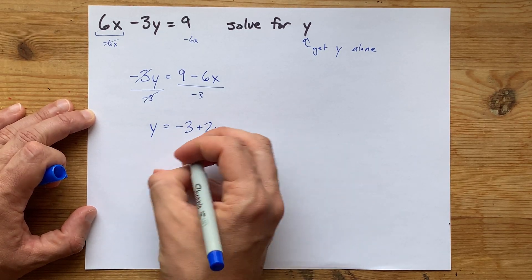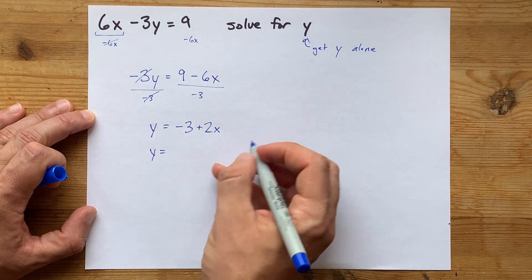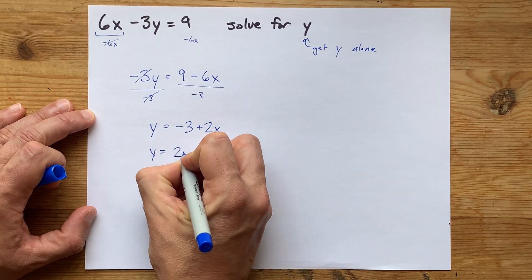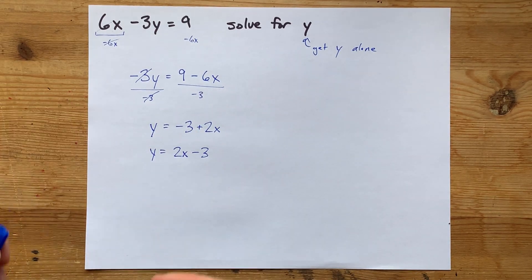Now, I don't really like the order that those are written in. I like putting my x's first and then my bare numbers at the end. So I'm going to do positive 2x and then minus 3, but that's just me rearranging the terms, right?